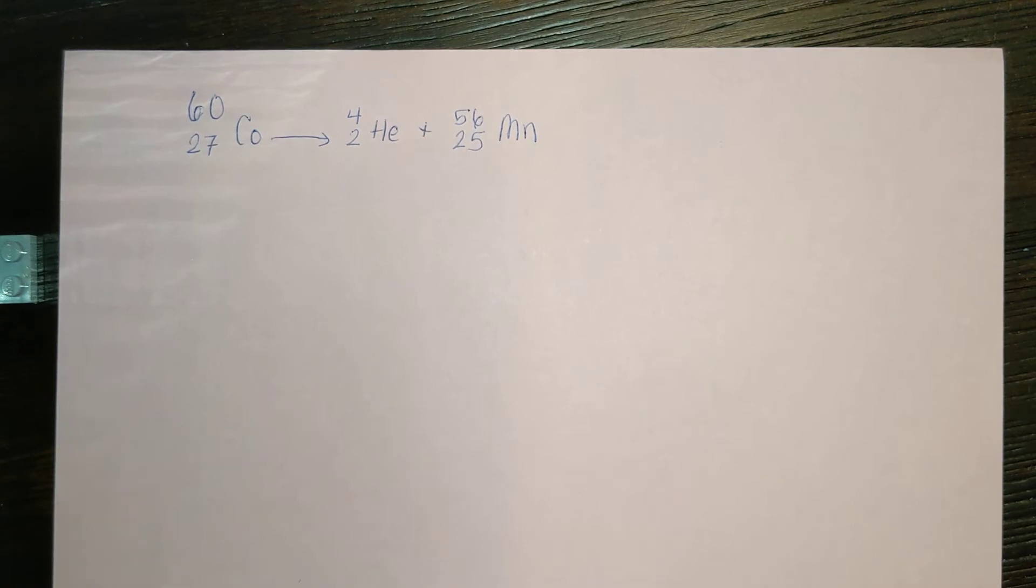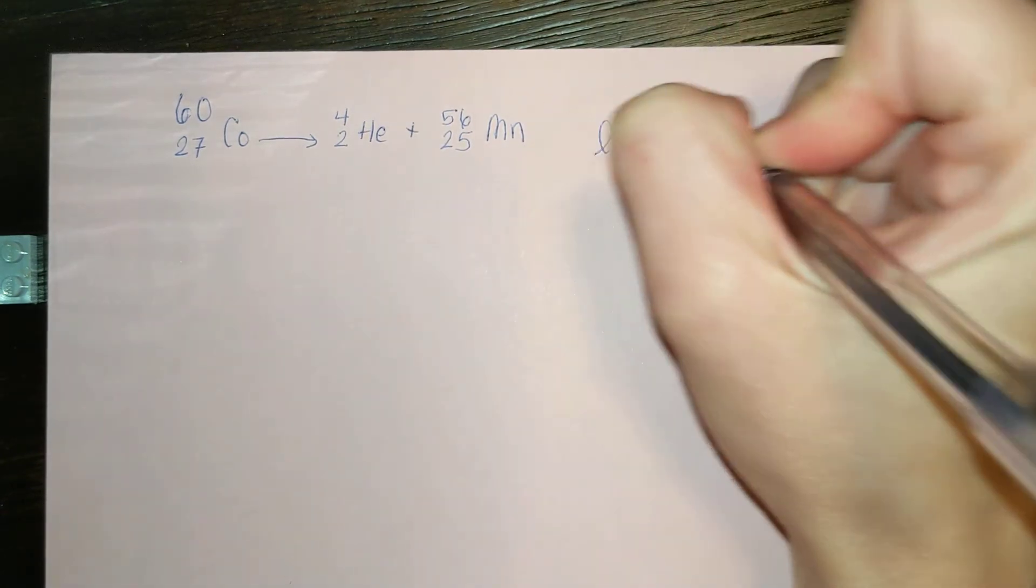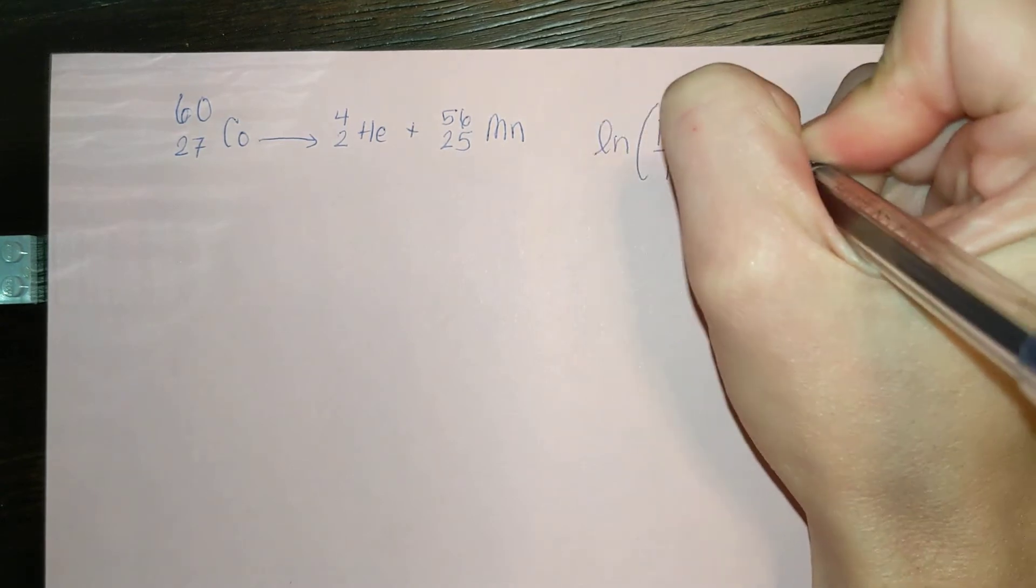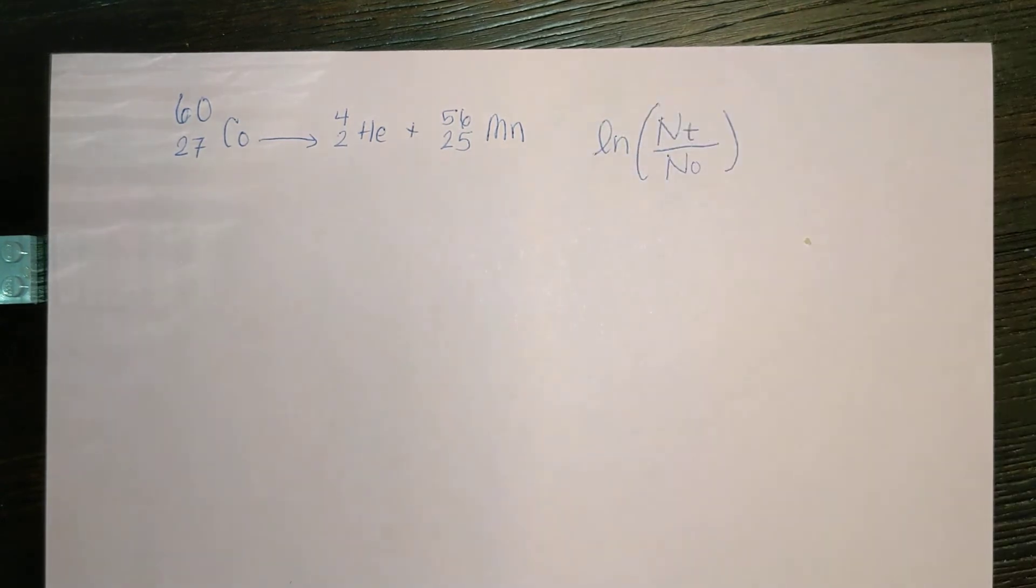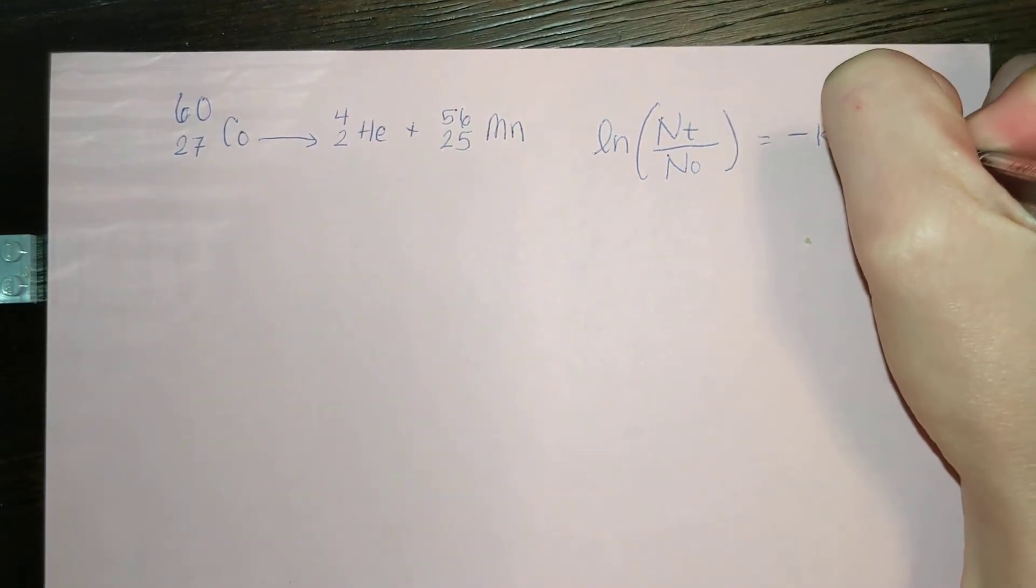We want to solve for how many particles were given a specific time. If you think back to chapter 14, anytime they've given us time and they want to know how much is left or how much is gone, that's going to be our integrated form of the rate law. So we have ln of the number of particles at time t over our initial number of particles equals negative k times t.